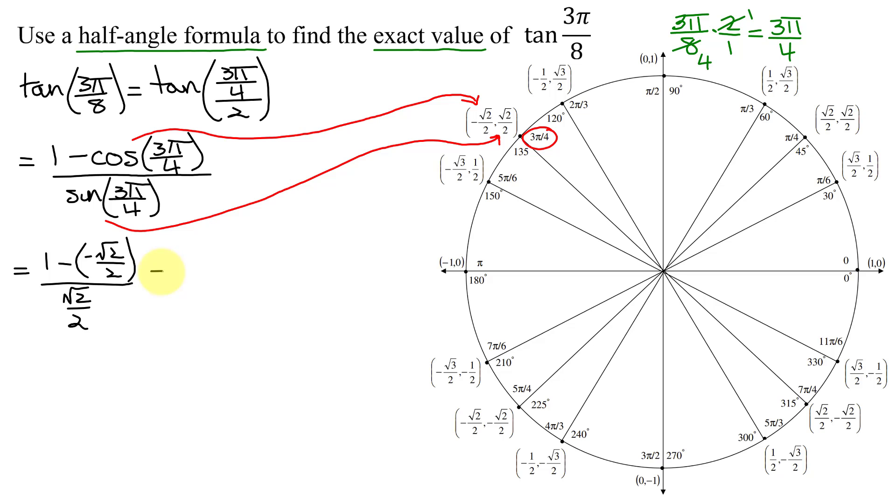So now all I have to do is neaten this up a little bit. So I get 1 minus the negative is plus the square root of 2 over 2, all divided by the square root of 2 over 2.